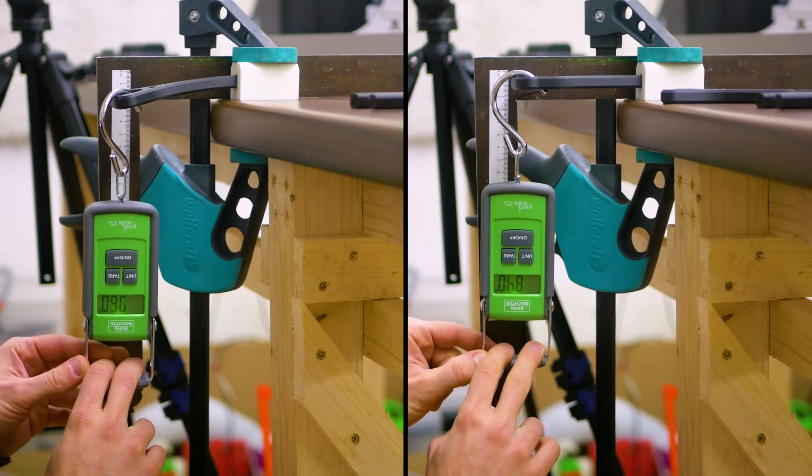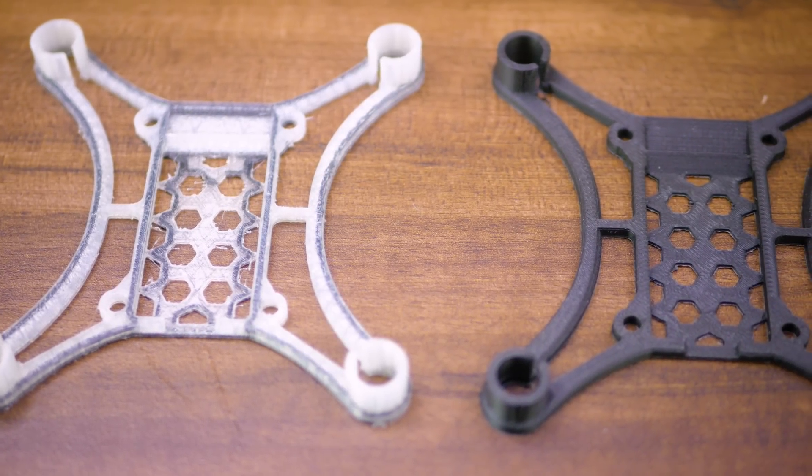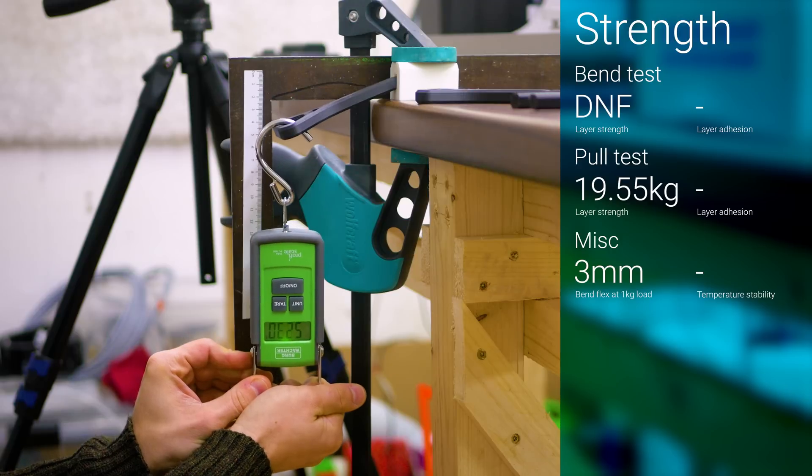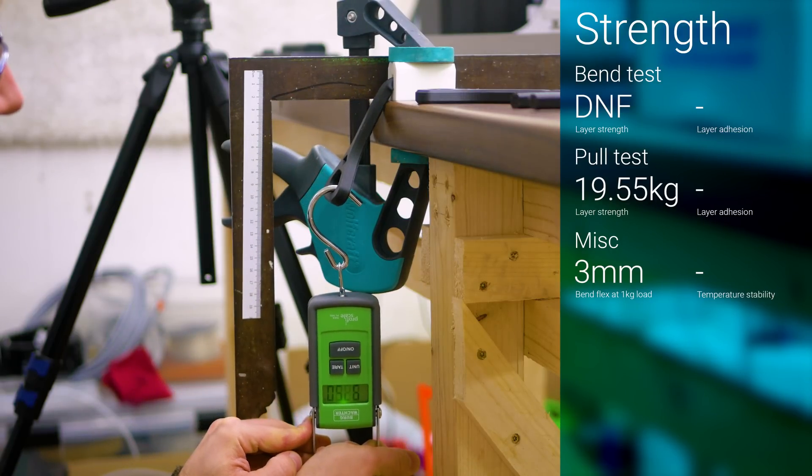The amount of continuous fiber was roughly the same as in this quadcopter frame printed with transparent nylon instead of Onyx. While the continuous fiber reinforced part did put up a better fight, it did still eventually kink, supposedly tearing the continuous fibers inside.